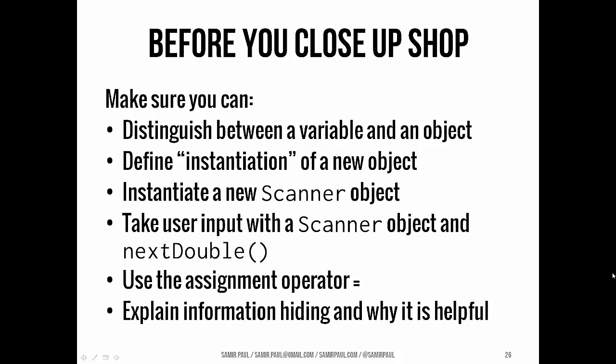Okay. So before you close up shop, a couple of things I want to make sure you understand. Go back through and look at the slides, go back through and re-listen to the video. If you need clarification, we want to make sure you can distinguish between a variable and an object. I want to make sure you can understand and define what instantiation is when you instantiate a new object. I want to make sure you can actually instantiate a new Scanner. We want to take user input with a Scanner object and the nextDouble method. I want to make sure you can use the assignment operator and tell me what's information hiding and why is it helpful? So I would encourage you take a look back through these slides, download the Convert code, open it up in Eclipse and run it for yourself. And, yep. We'll see you next class.